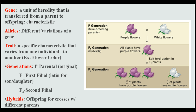Let's take a look at some definitions we're going to run into when talking about Mendel and genetics. We're also going to show examples using Mendel's pea plants in this chart. A gene is a unit of heredity that is transferred from one parent to an offspring — it's the chemical makeup of a characteristic. The gene we're looking at in this diagram is color: it's the chemical makeup that makes purple flowers purple and white flowers white.